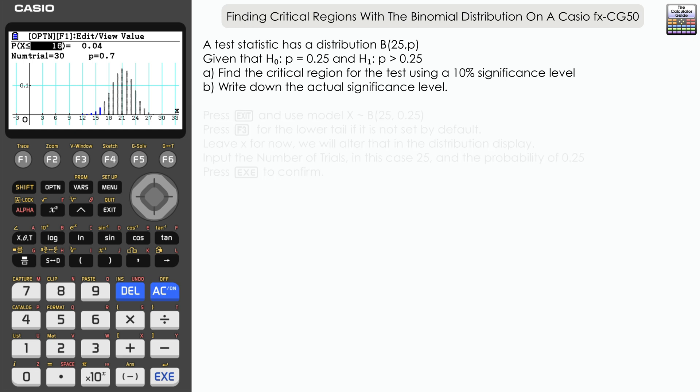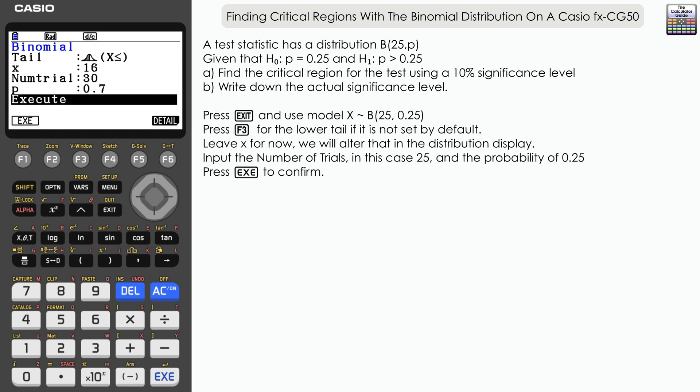Now I am going to exit out of the distribution display, pressing Exit, and I'm going to change the tail for our test here to the upper tail, F3. x I'm just going to leave—that was 16 from our previous question. We're going to alter that within the distribution display, but we do need to change the number of trials.